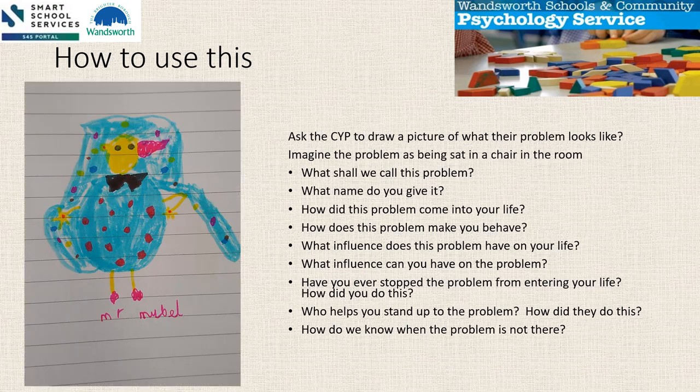I'm going to talk about how we can use externalising questions with a child or young person. I always start by asking the child to draw a picture of what they think their problem would look like — just from their imagination. You can see an example here with 'Mr. Muddle.' It really helps to think about the problem as being sat there in the room with you, creating the idea of it being external. We always try to give the problem a name — it can be anything they want, like Mr. Muddle or just a random name.